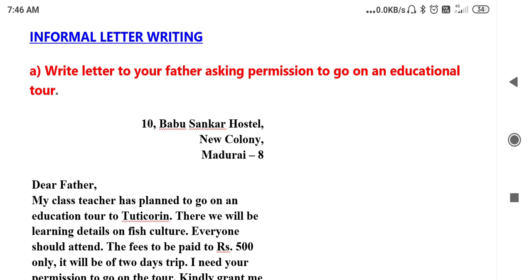Here are three informal letters. Number one: write a letter to your father asking permission to go on an educational tour. First you have to write your own address. For example, now Daniel is writing a letter to his father, so you write the address where Daniel is staying — that school address or hostel address.